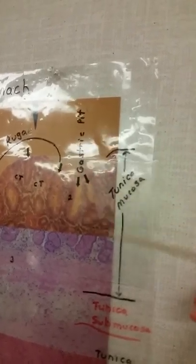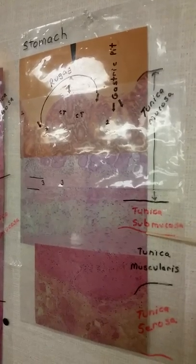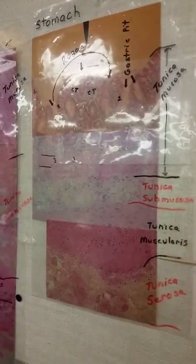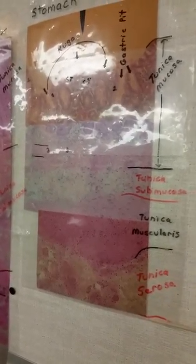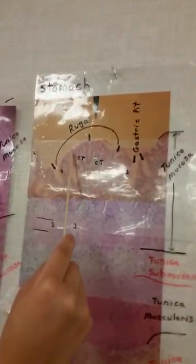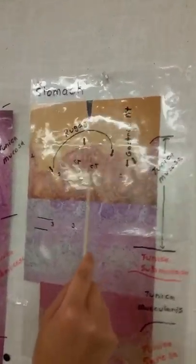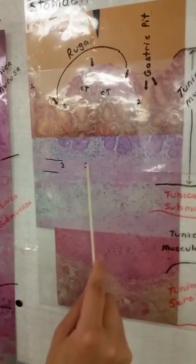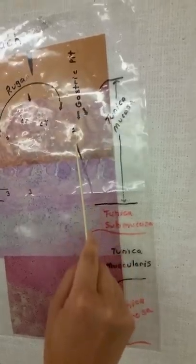Moving on to the stomach, we have the tunica mucosa layer here. And then to the tunica submucosa, then to the tunica muscularis here, and the tunica serosa. And then this is a simple columnar epithelial tissue, non-ciliated. This is connective tissue. This is the muscularis mucosa. This is the gastric pit for these here.